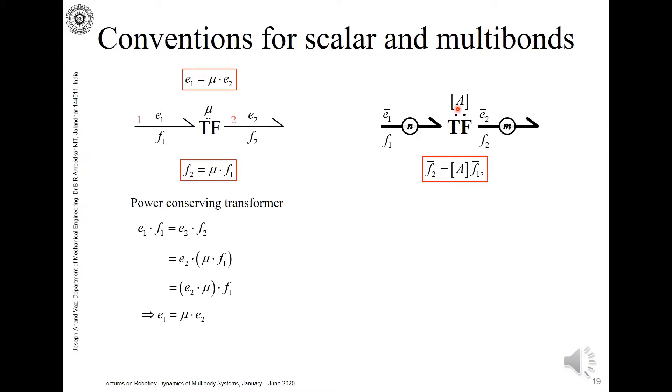And we define the relationship once again, the flow relationship. So the flow 2 vector is equal to A operating on the flow 1 vector. Naturally, A is an element of R^(m×n), so it's an m by n matrix. A power conserving transformer, so the transformer is a power conserving element, and so e1 transpose f1 will be equal to e2 transpose f2 vector.